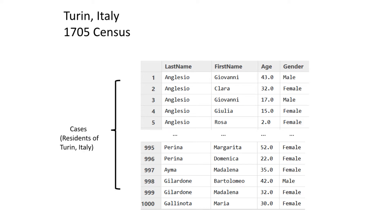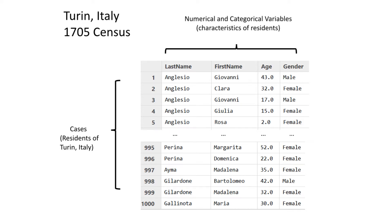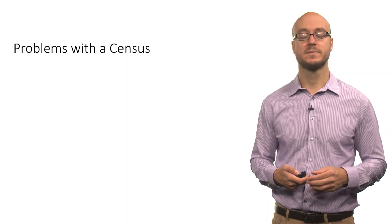The rows are residents of Turin, Italy — quite a few rows. The output is truncated to show part of it. The columns are characteristics of the residents: last name, first name, age, and gender of the respondent.